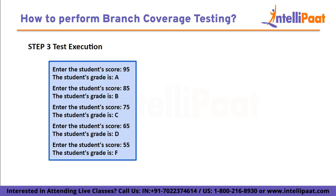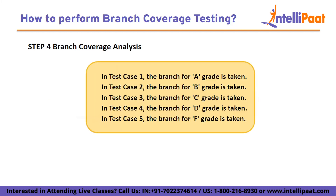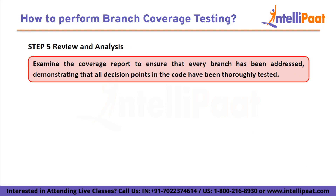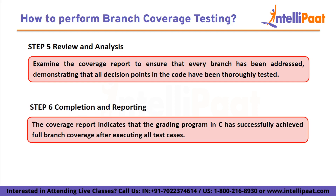The third step is test execution: running these test cases through the program makes sure that each case is tested. The fourth step is branch coverage analysis — while executing the tests, track which branches are taken within the calculate_grade function. Step five is to review the coverage report and confirm that all branches have been covered, indicating all decision points in the code have been tested. Step six is completion and reporting: after all test cases are executed, the branch coverage report shows that full branch coverage has been achieved for the grading program in C.